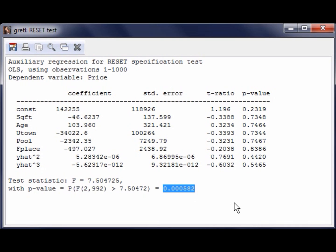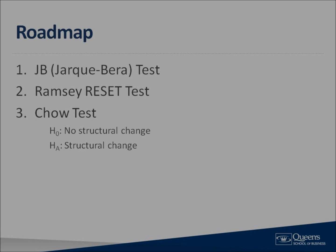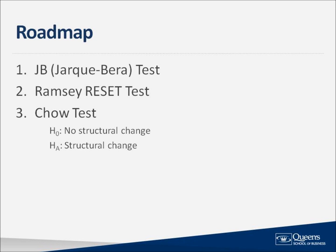Even though this specification test presents a problem with our model, let's continue with the next specification test, the Chow Test for Structural Change. More specifically, we are going to test whether the coefficient estimates are stable across the age of a house by breaking the sample into houses that are between 0 and 10 years old and 11 years old or older. The null hypothesis for the Chow Test is that there is no structural change. Before running the test in Gretl, we must determine the observation at which the house age increases from 10 to 11 years old. Since the data is already sorted by age, all we have to do is look at the data series.